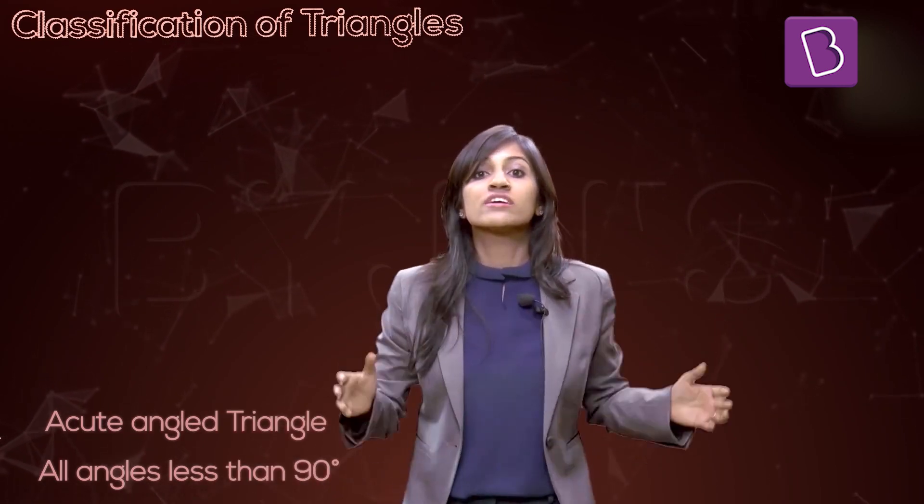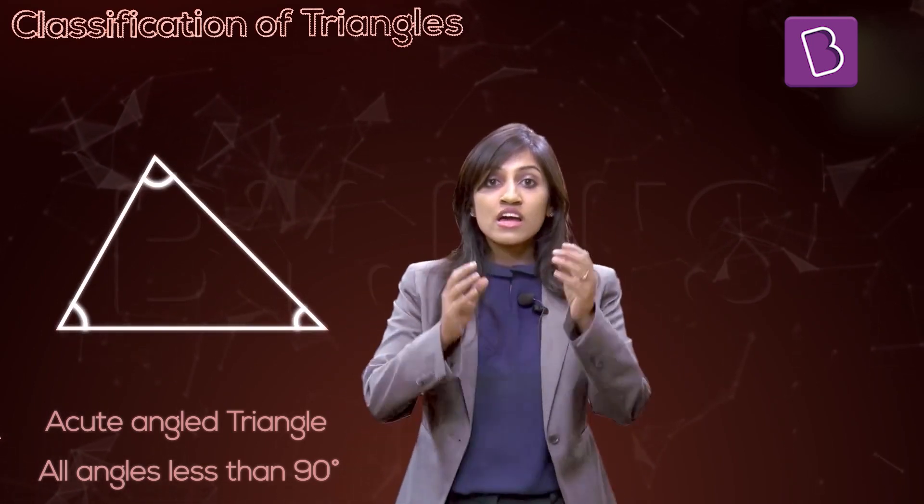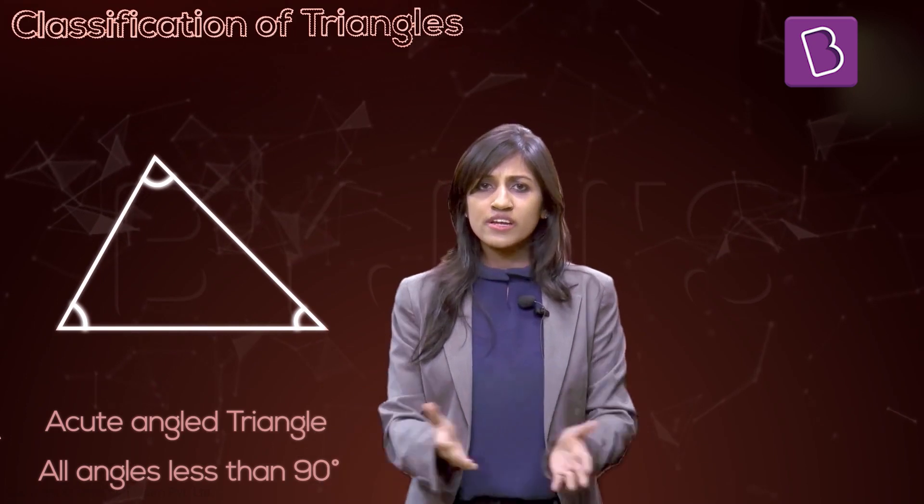Those are the three types of triangles based on sides. Now for classification two — based on angles. These are really obvious; you'll be like, 'Oh my god, I already know this!' But we'll go through it anyway. The first type based on angles is an acute angle triangle — a triangle which has any angle less than 90 degrees, because an acute angle simply means an angle less than 90 degrees.